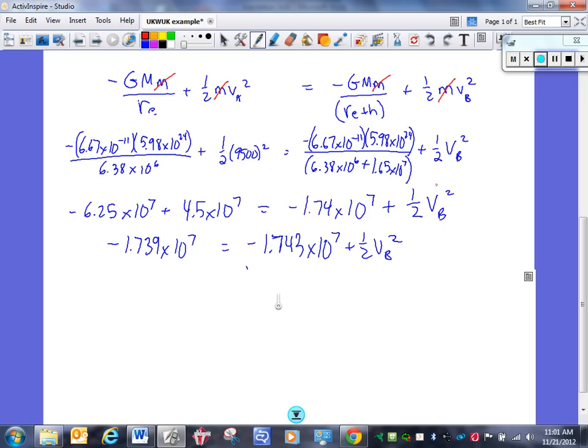Adding these together further. Negative 1.739 times 10 to the 7th. And here I added an extra digit onto my rounding. But it's still the same thing. Negative 1.743 times 10 to the 7th. And again, one-half VB squared. Continuing with the algebra. Adding this to this side. We get a positive number. 39,772. And finally, multiplying this by 2 and then taking the square root. 282 meters per second squared.